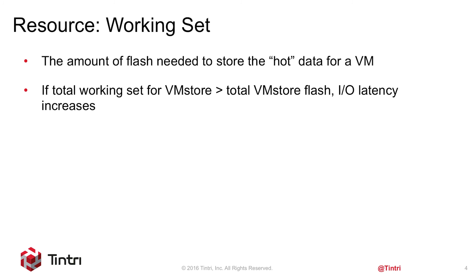Our final resource is working set, and there's a single metric here we call working set. The working set is basically the amount of flash needed to store the hot data for a VM. As your aggregate working set of your virtual machines approaches the flash capacity of your VM store, IO operations will start to spill to disk and increase IO latency.